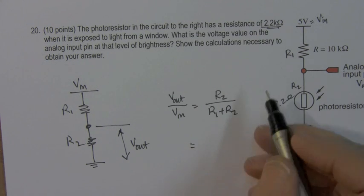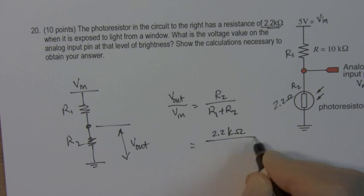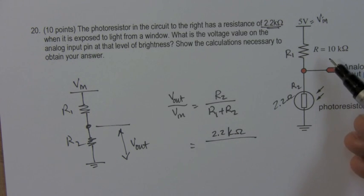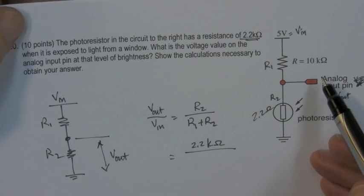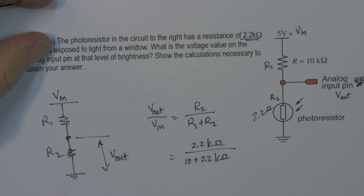So we're given that R2 is 2.2 kiloohms. The drawing says that R1 is 10k ohms. So 2.2 divided by 10 plus 2.2 kiloohms. So it's 2.2 divided by 12.